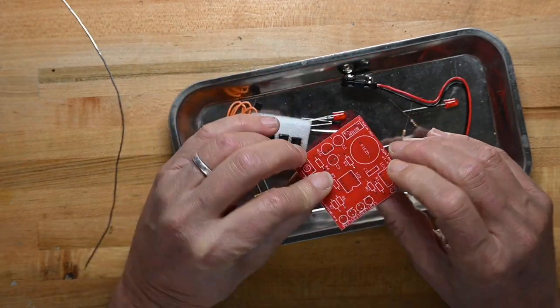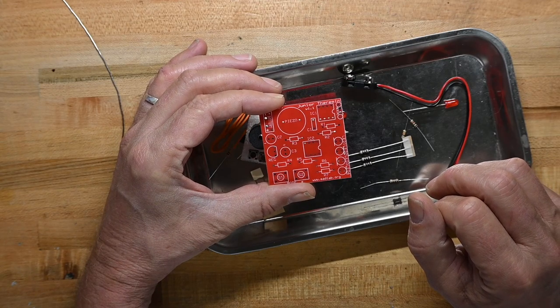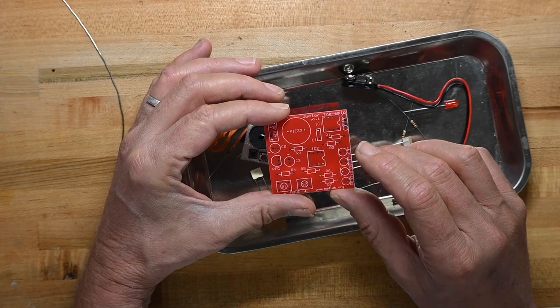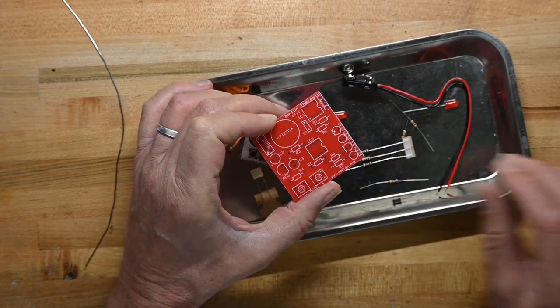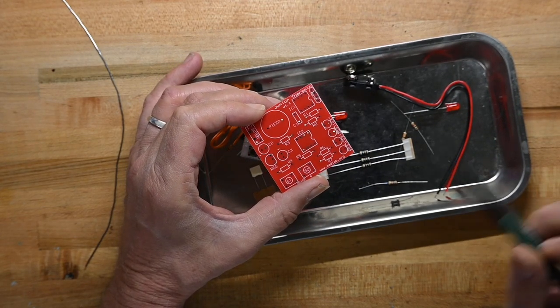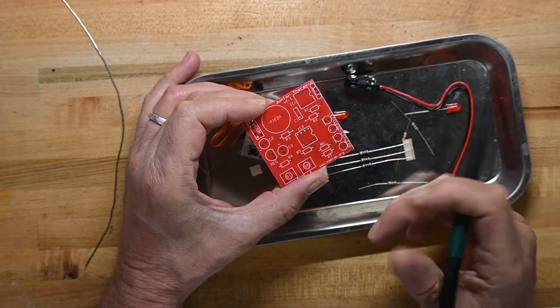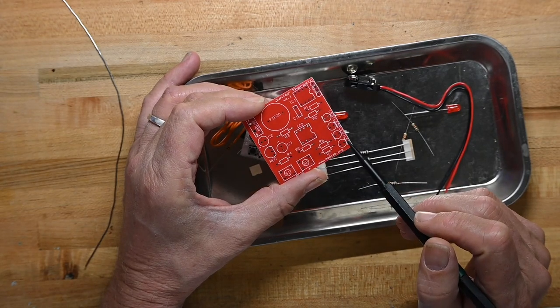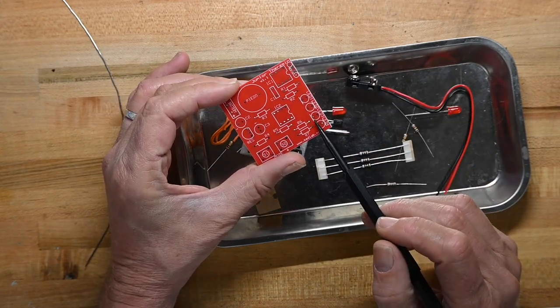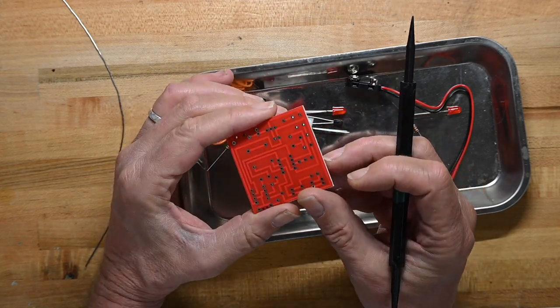And then we'll look at the board. No values on the board, so we will need the build guide to know which resistors go where. The LEDs, it's a non-standard symbology for the LEDs. It's got a circle and then a line outside of the circle. I'm assuming that's where the cathode goes or the flat side of the LED.